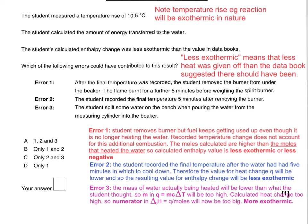So the original question asked which of the errors could have contributed to the result — that is, the calculated enthalpy change being less exothermic. Having thought it through, it's obviously only error 1 and error 2, so our answer should be B.